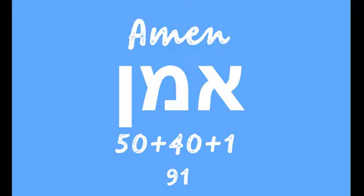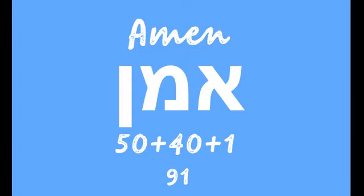Today we wanted to talk about the meaning of the Hebrew word Amen. The word Amen is composed of three letters: Aleph, Mem, Nun. The numerical value of the word Amen is 91, because Aleph equals 1, Mem equals 40, and Nun equals 50 — together they create the number 91.